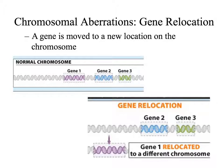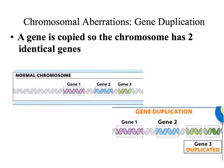Another problem can be gene relocation. If the gene is moved to a new location on the chromosome, there are sometimes problems for transcription to occur. Another type of chromosomal aberration is gene duplication, when a gene is copied so that the chromosome has two or more identical genes. This may or may not be a problem — sometimes having two genes is not an issue, but sometimes it can make too much of a particular protein, which can also cause issues.